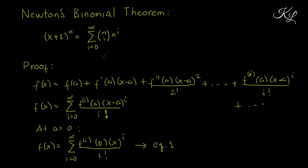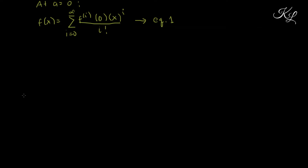If you compare the theorem to equation 1, there are similarities: we already have the summation from i equals 0 to infinity, and we have x^i. For the function of x, we have (x + 1)^n in the theorem. So we can let f(x) equal to (x + 1)^n, as shown in the theorem.